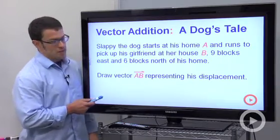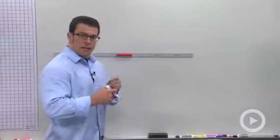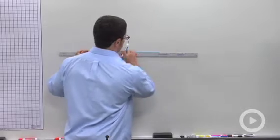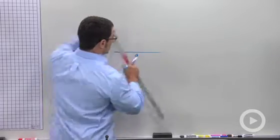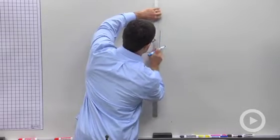Draw vector AB representing his displacement. Let's do that. Now he's gone nine blocks east and six blocks north. So I'll make that nine and that six.